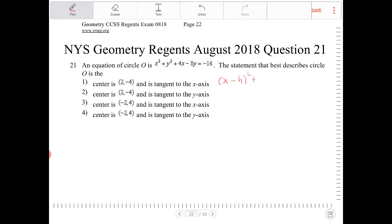x minus h squared plus y minus k squared is equal to r squared, where h and k is going to be the center of the circle. So to do something like this, we're going to separate out the variables.